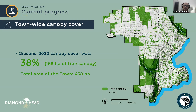At 38%, Gibsons is fairly high relative to the land base, and it's comparable to canopy cover in communities that have mixed urban and rural land uses, such as Langley Township in the Lower Mainland. It's also higher than canopy cover in more urban cities such as the City of North Vancouver and the City of New Westminster, also in the Lower Mainland, where canopy cover is between 20% and 25%.